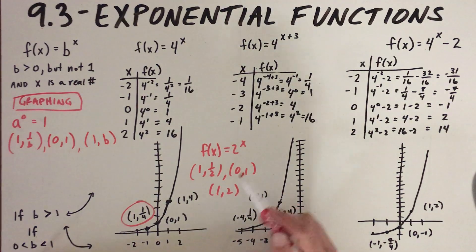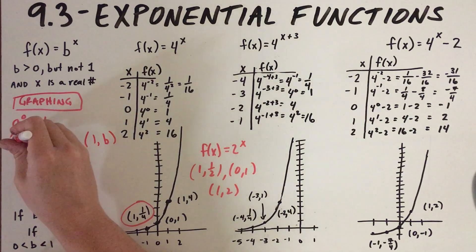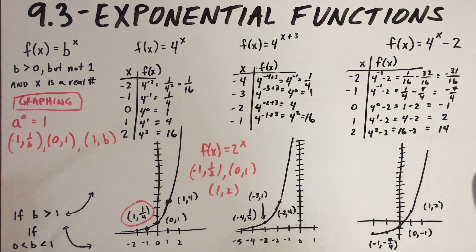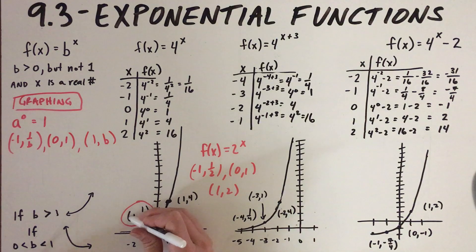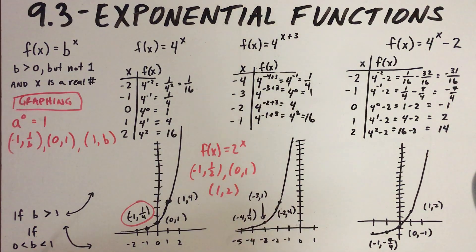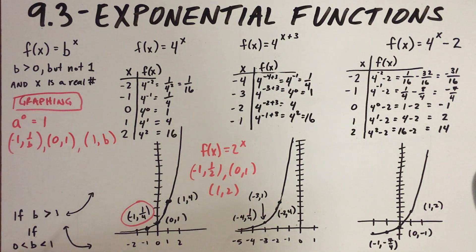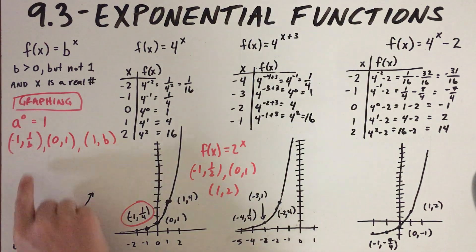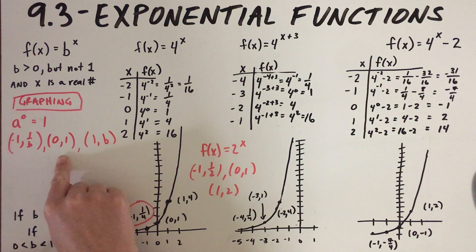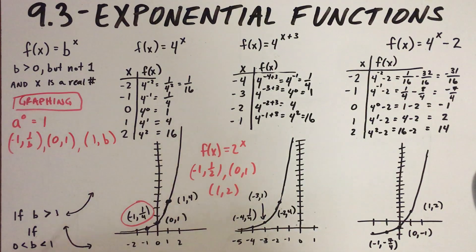Whatever the base is — and I said one but I meant negative one — this point is negative one. Anything to a negative power is going to be one over that base: 2 to the negative one is one half, 3 to the negative one is one third, and so on. The point (0, 1) is because anything to the zero power is one, and anything to the first power is just itself.